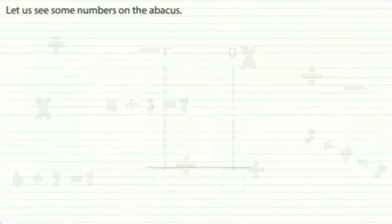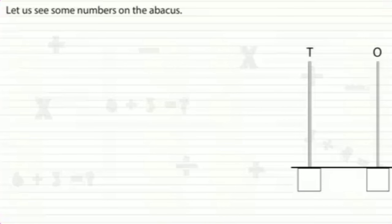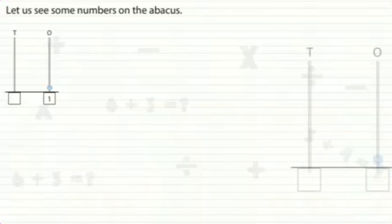Let us see some numbers on the abacus. For 1, we put 1 bead in the ones spike. For 2, we put 2 beads in the ones spike.